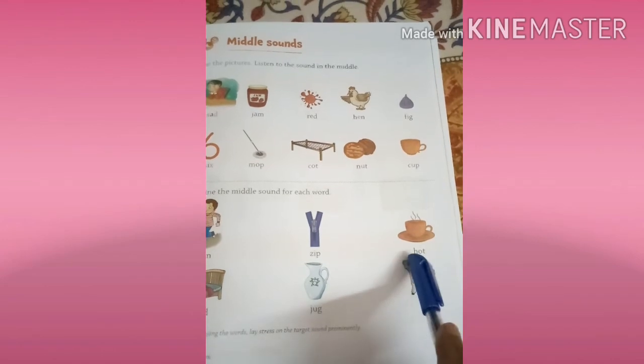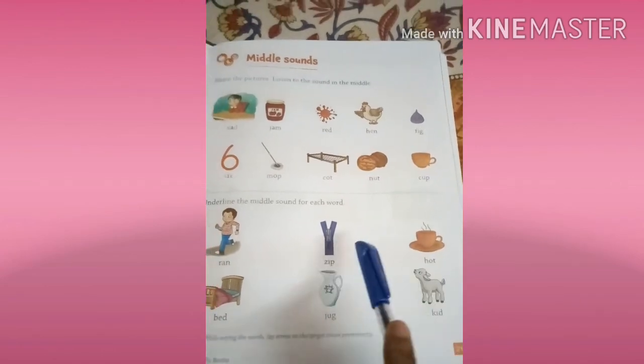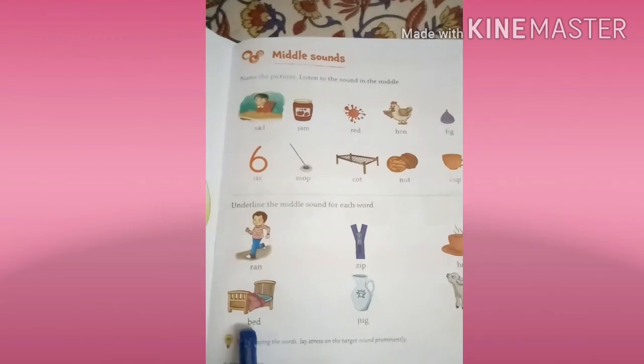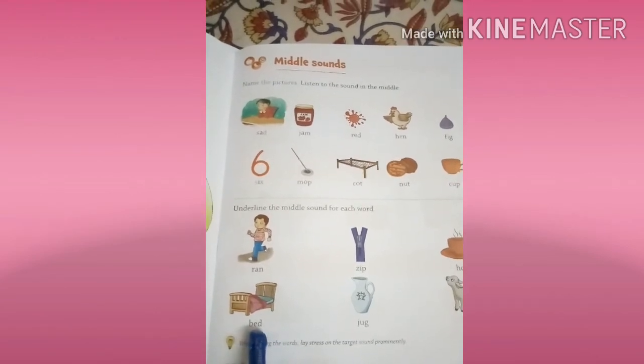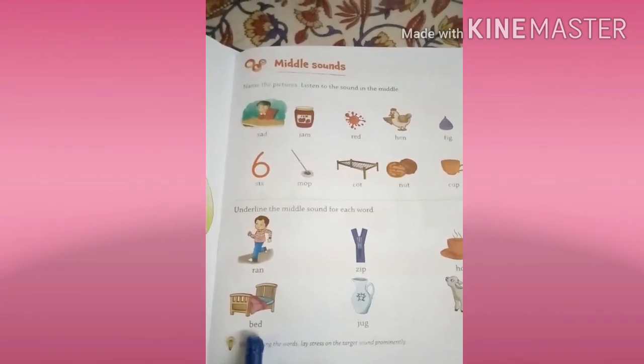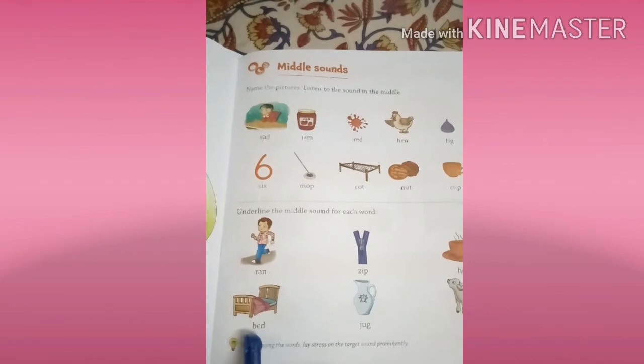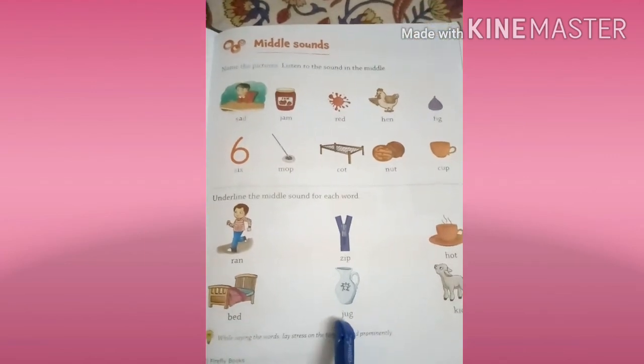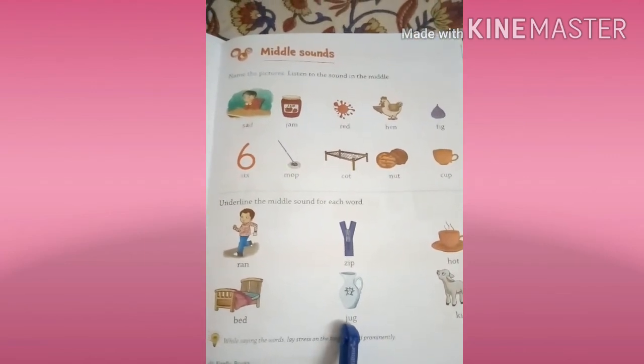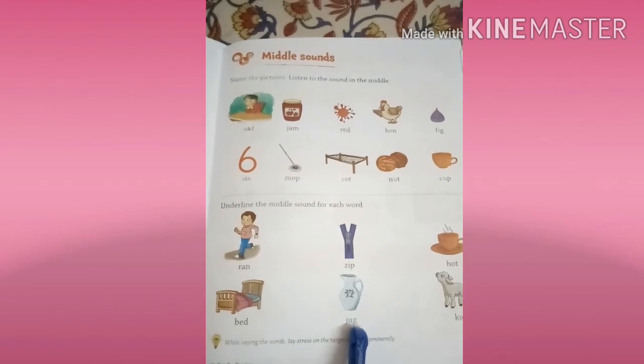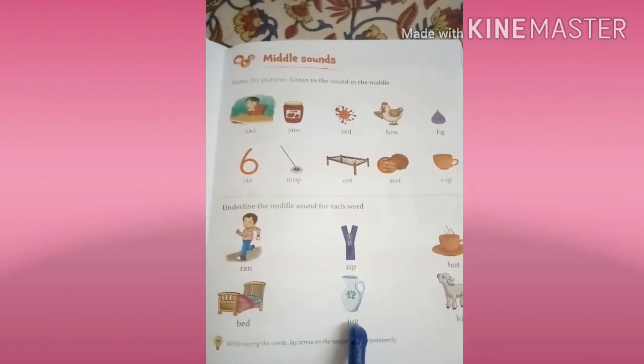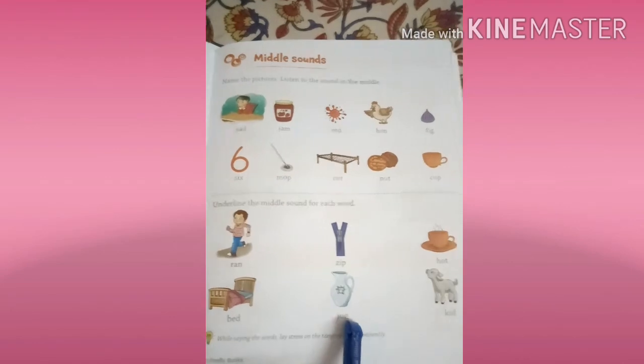H sound is H, O sound is O, T sound is T. H-O-T, hot, hot. Okay. B sound is B, E sound is E, D sound is D. B-E-D, bed. J sound is J, U sound is U, G sound is G. J-U-G, jug, okay.